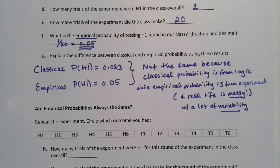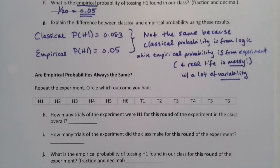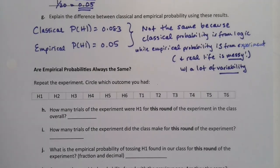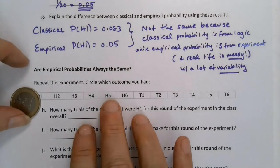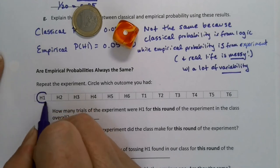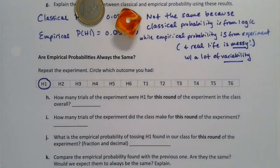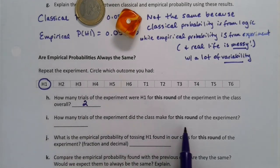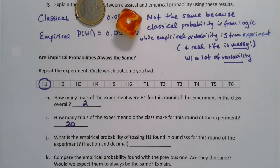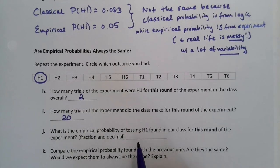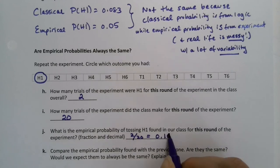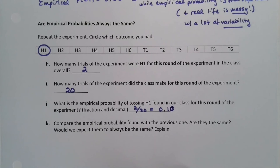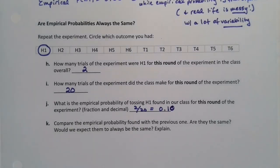All right. Now, is our empirical probability always the same? So we just compared classical to empirical. But what about another empirical? What if we did it again? So what if I took my coin and my die and I tossed them? Oh! And I did get H1 that time. Look at me. Right? So what if I got H1 that time? What if we did it over and over? Right? Okay. So suppose total, including me, there were two trials that were H1 out of this class. How many trials of the experiment were done for this round? Again, it would be 20 because there were 20 students in the class that day.